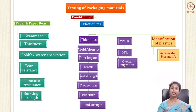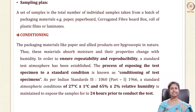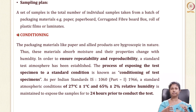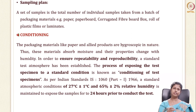We'll also touch upon accelerated shelf life or storage life of products kept in different packaging materials. Let's start with the sampling plan. Whether for a product or packaging material, you always need a sampling plan. A set of samples is the total number of samples taken from a whole batch — from a web of paper, paperboard, corrugated fiberboard, or rolls of plastics — and the number of samples taken is very important.